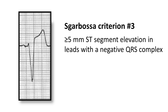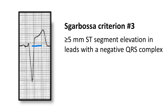The third and final Sgarbossa criterion is a little different. Rather than looking for concordance, what we're looking for is extreme discordance. We're looking at negative QRS complexes and the amount of ST segment elevation in those leads. Normally we'd expect to see some ST segment elevation following a negative QRS complex, but what we're looking for here is very exaggerated ST segment elevation — specifically when it measures five millimetres or more in height.